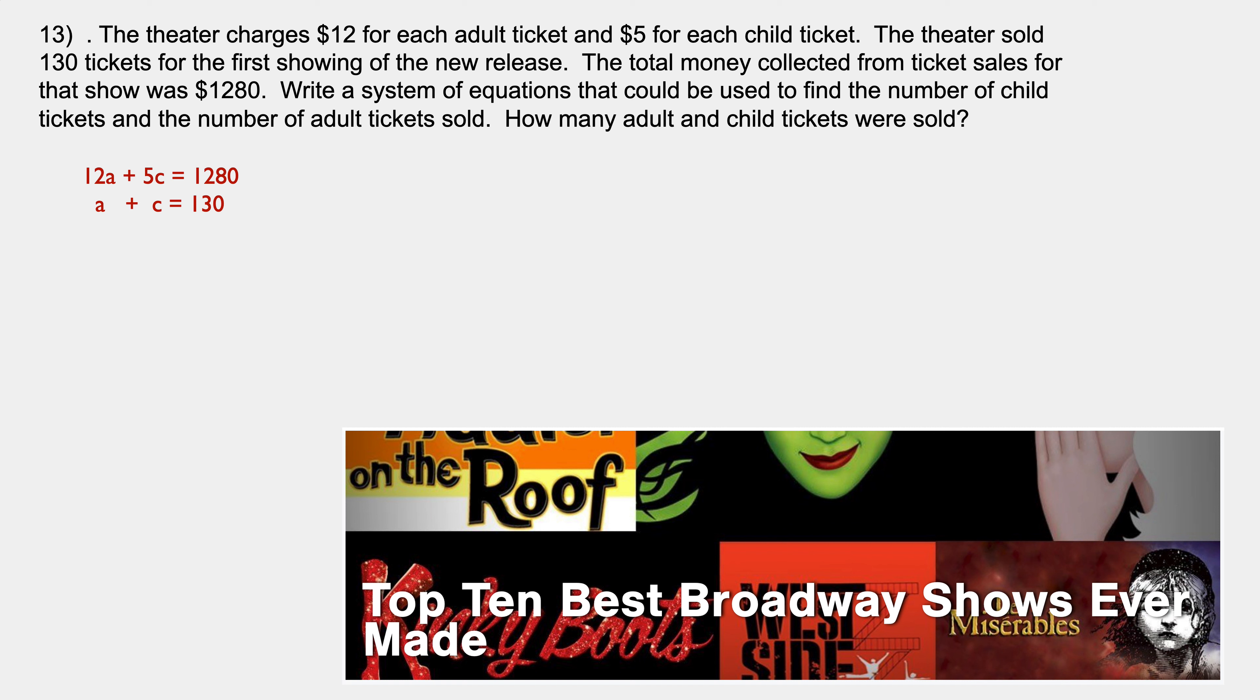Question is, is this an elimination technique problem or is this a substitution problem? Definitely elimination, right? I have the a's over the a's, I have the c's over the c's, the equals over the equals, numbers over numbers. What do I want to get rid of here? I think I'll get rid of the c's. So I'll rewrite the first equation: 12a plus 5c is 1,280, and I'm going to multiply the bottom one by negative 5. So if I multiply the bottom one by negative 5, I get negative 5a, negative 5c, negative 650. Adding them up, I get 7a equals 630 dollars. Dividing by 7, and I find out that there were 90 adult tickets sold. So if there were 90 adult tickets sold, what were the number of child tickets sold? Well, adult and child add up to 130. Adults 90, so subtracting 90 from both sides, the child ticket has to be 40.